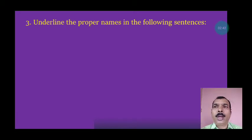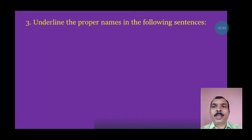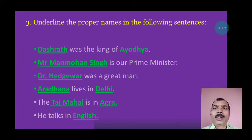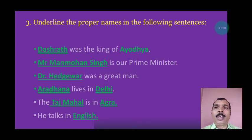Number 3: Underline the proper names in the following sentences. Answers written in green letters: 'Dashrath was the king of Ayodhya' — Dashrath, Ayodhya. 'Mr. Manmohan Singh is our prime minister' — Mr. Manmohan Singh. 'Dr. Hedgaywar was a great man' — Dr. Hedgaywar. 'Aradhana lives in Delhi' — Aradhana, Delhi. 'The Taj Mahal is in Agra' — Taj Mahal, Agra. 'He talks in English' — English. So these were proper naming words.